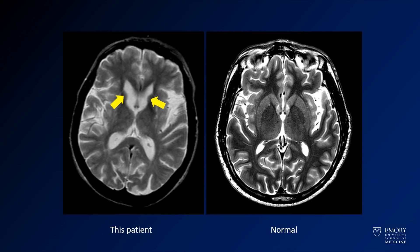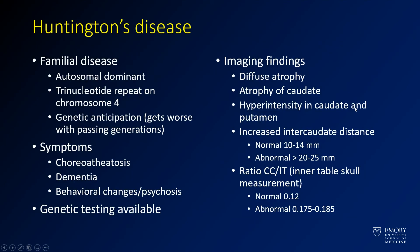Here I'm showing you the images from the first slide. What you're seeing is that in this patient the caudates bilaterally are extremely small compared to the normal caudates on the second normal patient. So what you have here is a case of Huntington's disease.